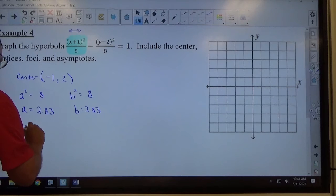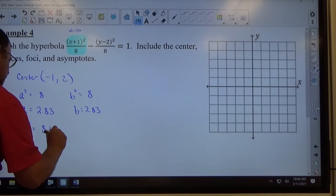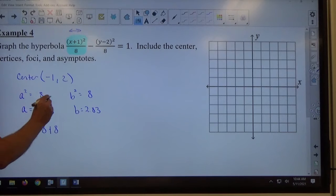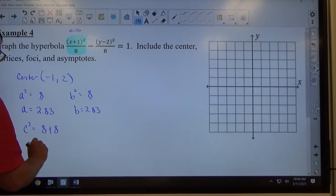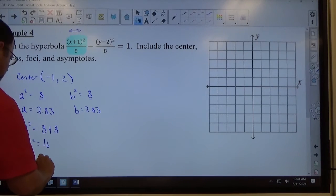Finally, I know c² equals a² plus b². a² is 8, b² is 8. So c² is 8 plus 8, so c² equals 16, which means c equals 4.